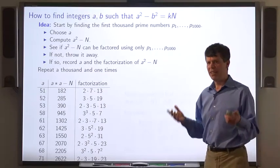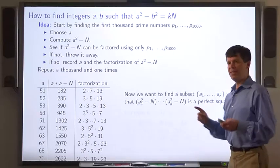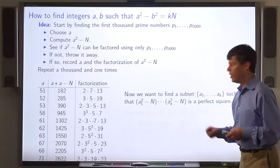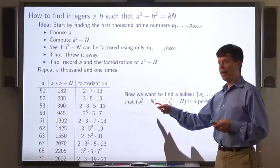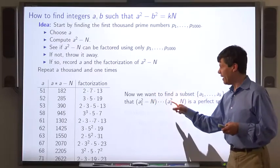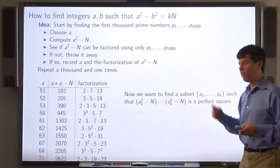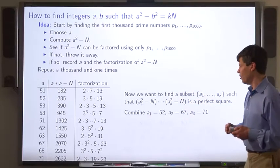How do we find the integer b? We want to find a subset, say a1 through ak, of those values of a such that a1 squared minus n times a2 squared minus n and so on is itself a perfect square.